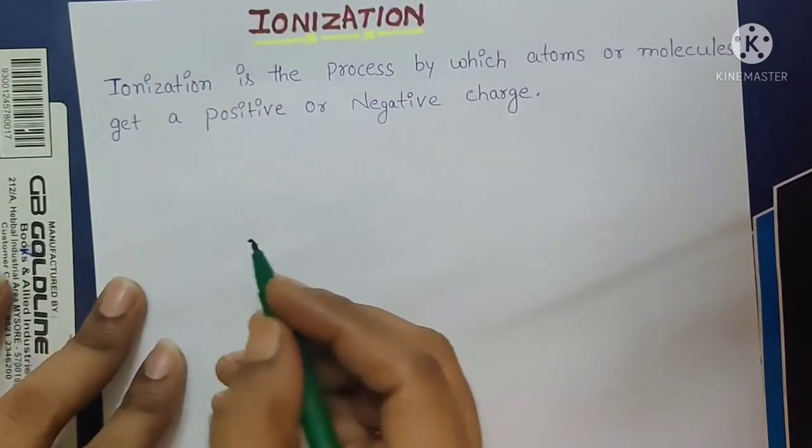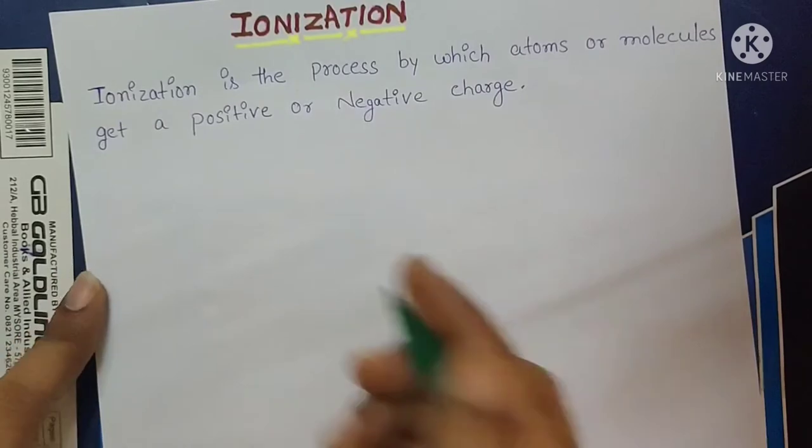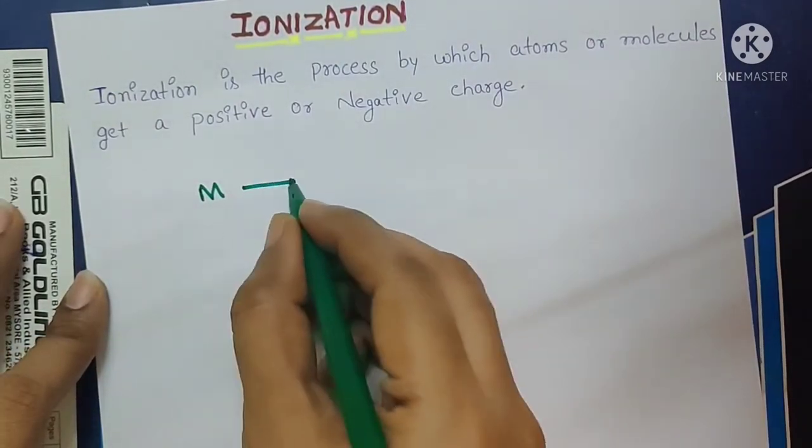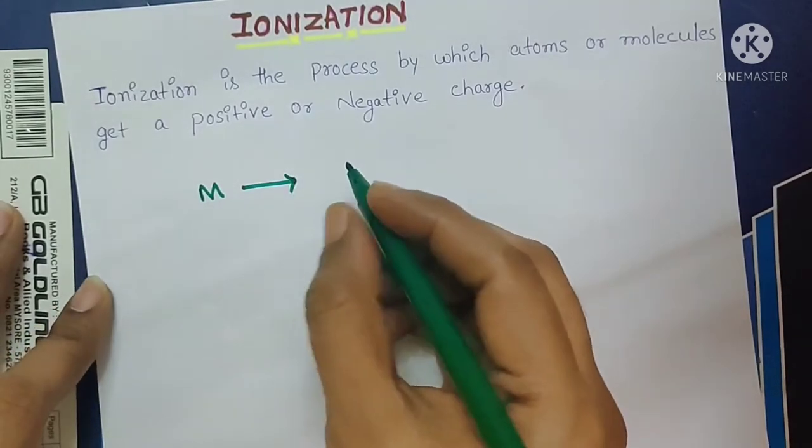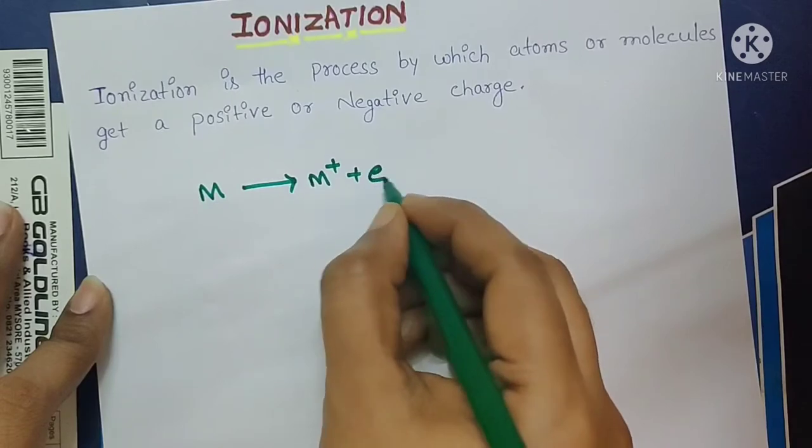Ionization, I will give one best example. General equation I will tell. For example, we are taking M substance here. When it ionizes in the aqueous solution, it dissociates into M plus plus E minus.